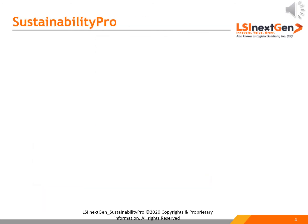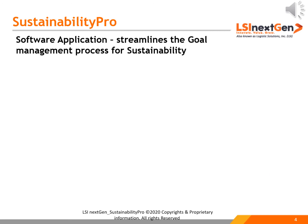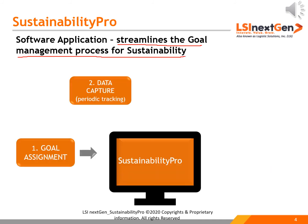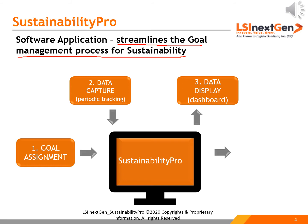Sustainability Pro is a software application that streamlines the goal management process for sustainability. The platform allows corporates to assign goals, capture data, and track them periodically, and display the data in a meaningful way through dashboards — ensuring compliance readiness and audit reporting.